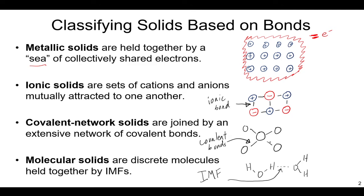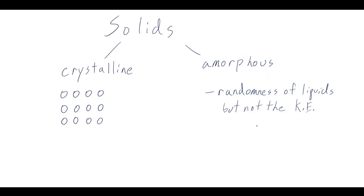Those are four of the main types of solids. Many of them are crystalline — you can have amorphous variants, but typically these form crystalline structures with a repeated unit.